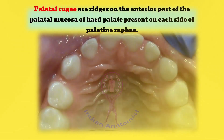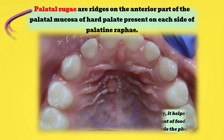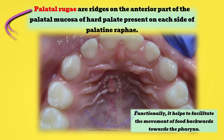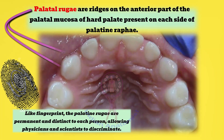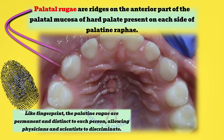Palatal rugae are ridges on the anterior part of the palatal mucosa of the hard palate, present on each side of the palatine raphe. Functionally, they help facilitate the movement of food backwards towards the pharynx. Like fingerprints, the palatine rugae are permanent and distinct to each person, allowing physicians and scientists to discriminate between individuals.